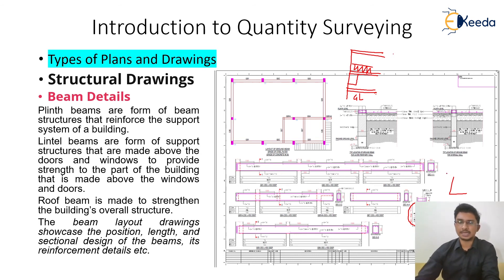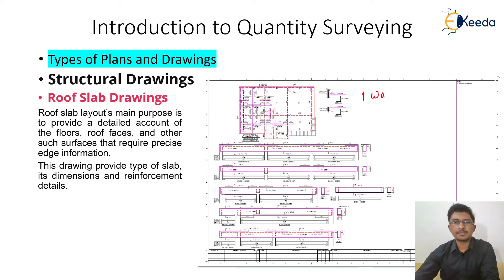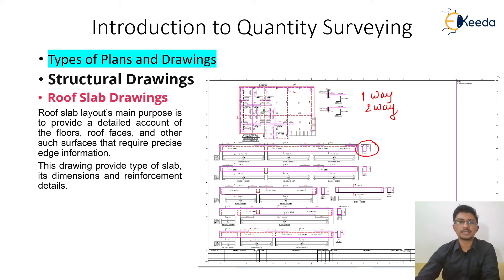The last structural drawing is the roof slab drawing. It details whether the slab is a one-way slab or two-way slab, how the slab reinforcement is placed, how the merging between beam and slab takes place, and how the structural steel is aligned. This drawing is used to calculate both concrete quantity and steel quantity for the roof slab.